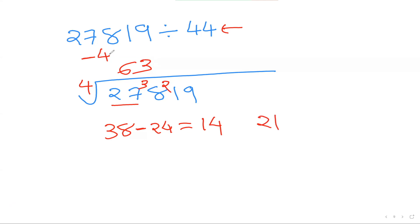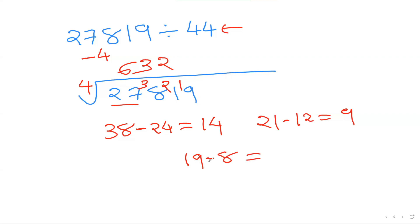With 9: 4×2=8, so quotient digit is 2, remainder 1, giving 19. Once more: 2×(−4)=−8, so 19−8=11. That is your remainder. The answer to 27819 ÷ 44 is 632 remainder 11. Cool, isn't it?